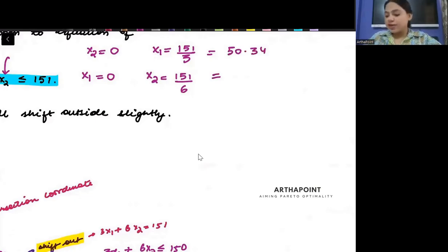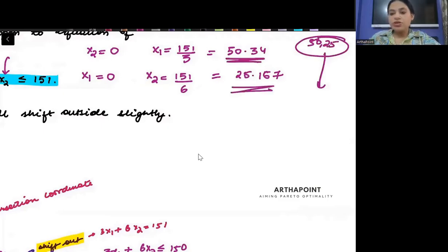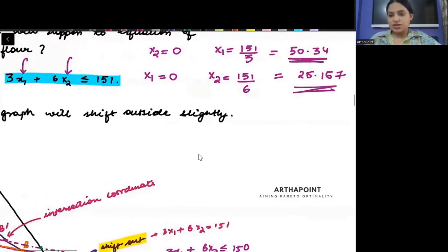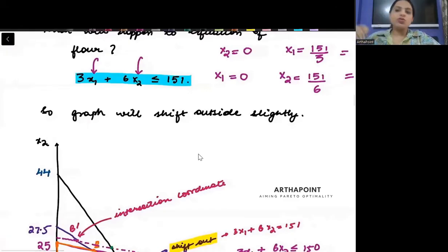And 151 divided by 6, this gives you 25.167. If you can clearly see earlier my intercepts were 50 and 25. Now, my intercepts are changing. They are 50.3 and 25.16. That means that there is going to be a shift to the right.